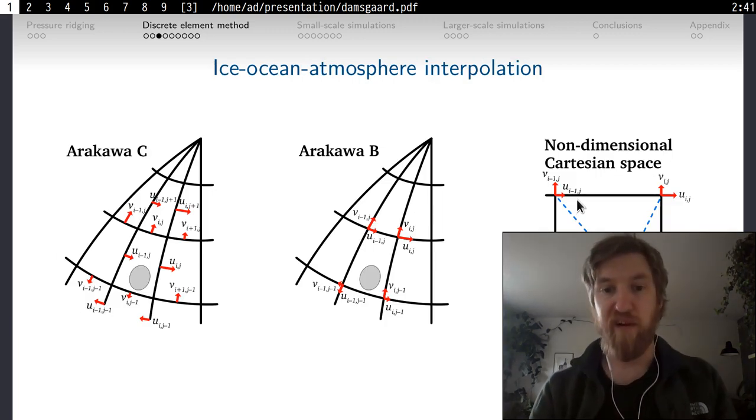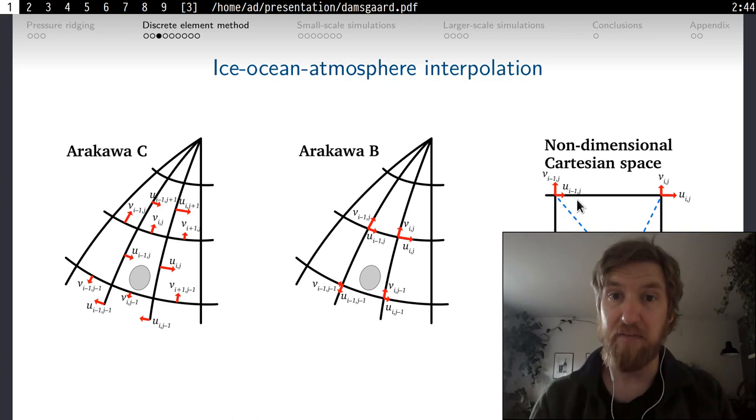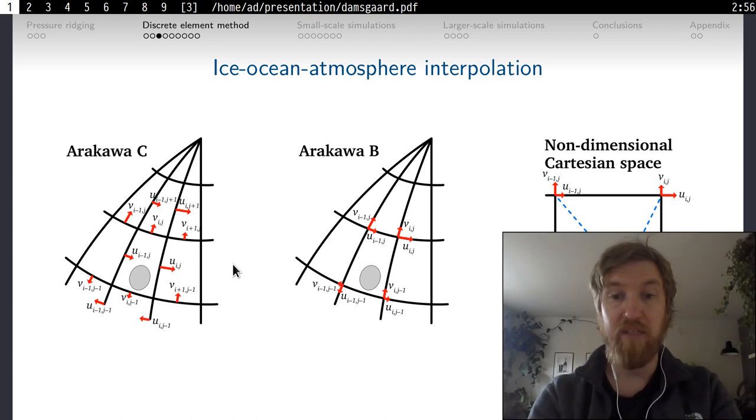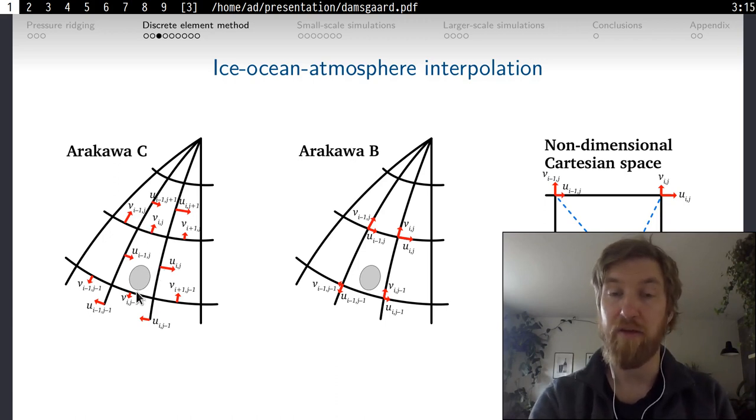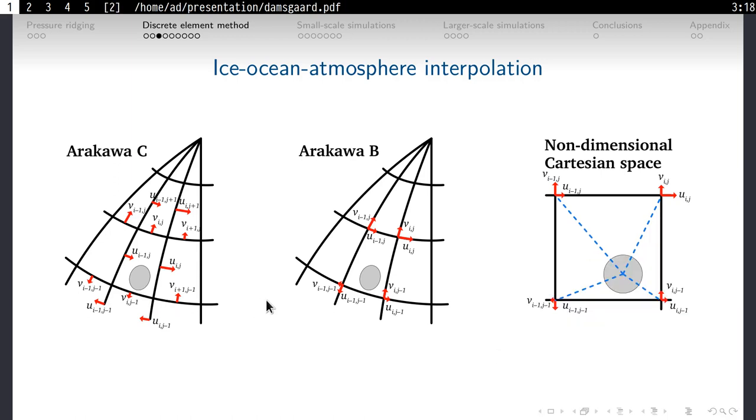The next task is to transfer information between your ocean and atmosphere grids and the discrete Lagrangian ice particles. Depending on what kind of grid you have within the ocean and atmosphere, you need to interpolate the nodes on the cells onto the ice flows. For stability reasons, most models are using a staggered grid, where different velocity components are placed on different sides of the model cells. What we use is a bilinear interpolation scheme to transfer information from the ocean grid onto the ice particles.